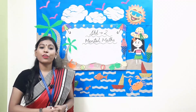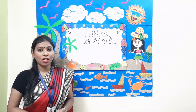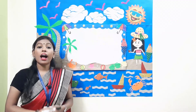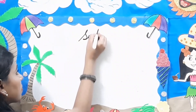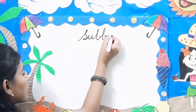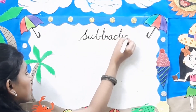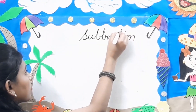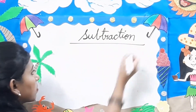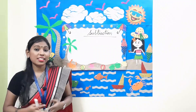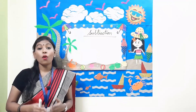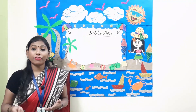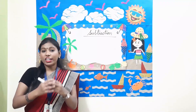Hello children and welcome to class 2 mental maths class. Our first topic is subtraction. What is subtraction? It is the process of taking one number or amount away from another.